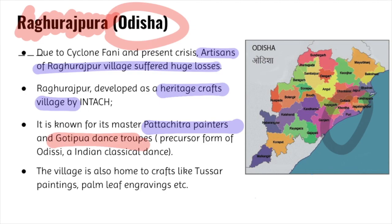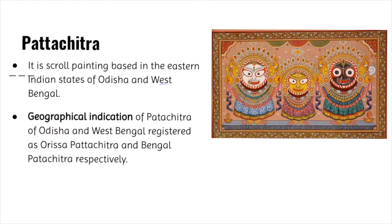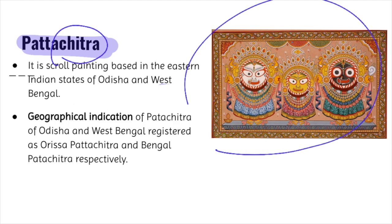Now we will see Patachitra art. 'Pata' literally means cloth while 'Chitra' literally means picture, so Patachitra is actually a cloth-based scroll painting. It can be vertical or horizontal. It is practiced in the states of Odisha as well as West Bengal.